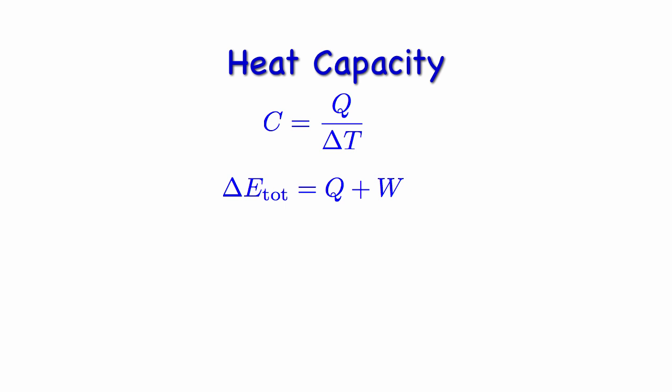And if you remember, I also wrote it this way: delta E total is Q plus W. And so at one point I had written that Q was delta E total minus W. So I just substituted that in and said that's another way to say heat capacity.